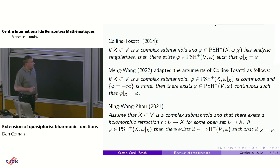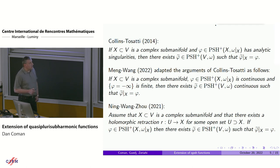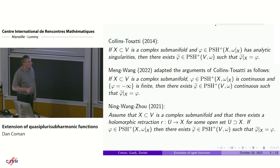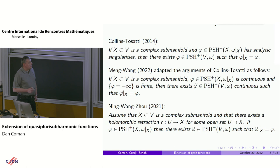Again, X is smooth — not an analytic subset, no singularities. And the strictly plurisubharmonic function on X is just continuous (we understand continuity allowing minus infinity as a value, or equivalently e to the power phi is continuous), but the polar set is finite. For such objects, you can extend them to continuous strictly plurisubharmonic functions on V, again allowing minus infinity as a value. So this is a set of results proving extension when the function is special.